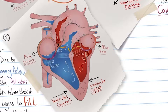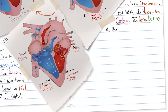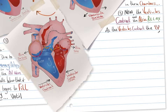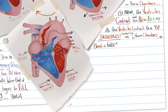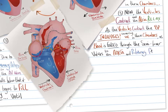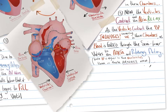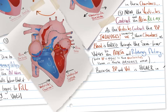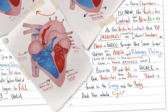Step three: the ventricles contract and the atria relax. As the ventricles contract, blood pressure increases, lowering volume in these chambers as blood is forced through the semilunar valves to the aorta and pulmonary artery, since blood pressure is now higher in the ventricles than in the arteries. Because blood pressure and volume are higher in the ventricles than in the atria, blood is forced to the lungs and the body, and the whole cycle continues.